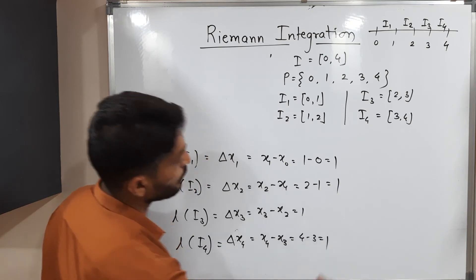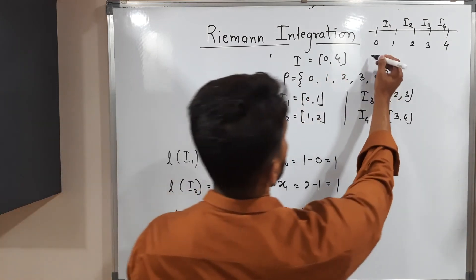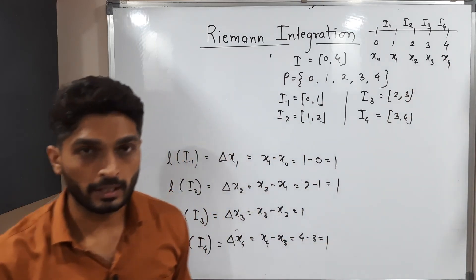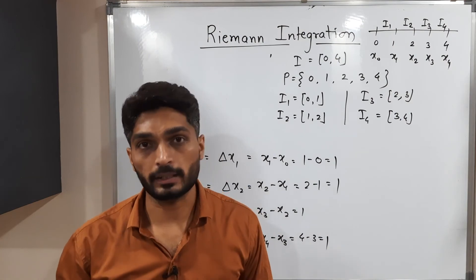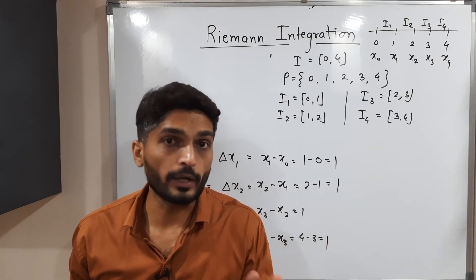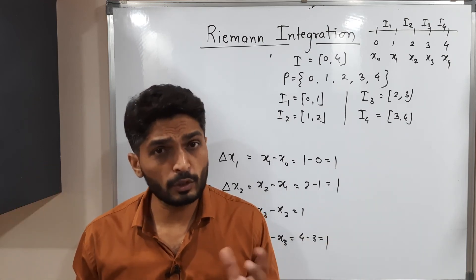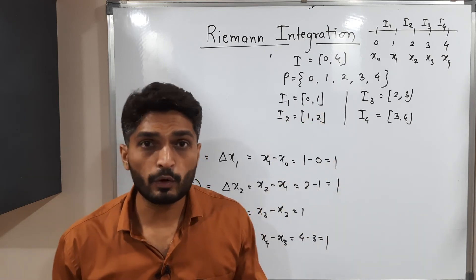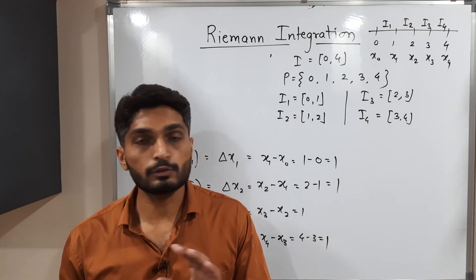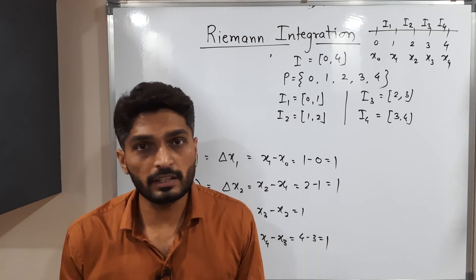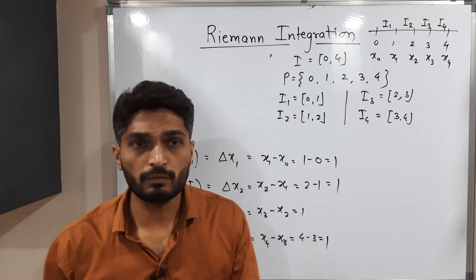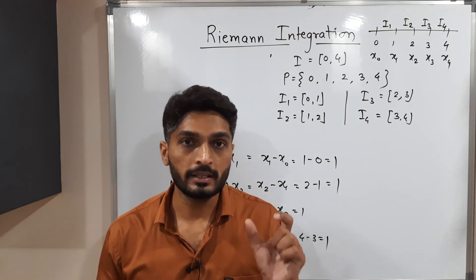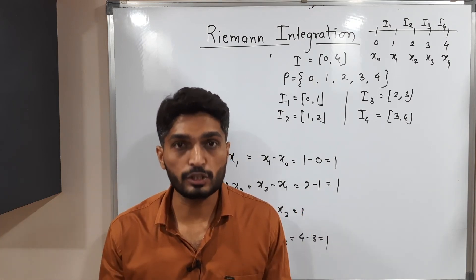So in this example, x0 = 0, x1 = 1, x2 = 2, x3 = 3, and x4 = 4. What we have understood is that if you have any interval, you can introduce a few points between the endpoints, and because of those points the interval is divided into sub-intervals, which may have different lengths. Fortunately in this example all lengths are equal, but that is not necessary. We denote the length of each sub-interval by delta xi = xi − x(i-1).